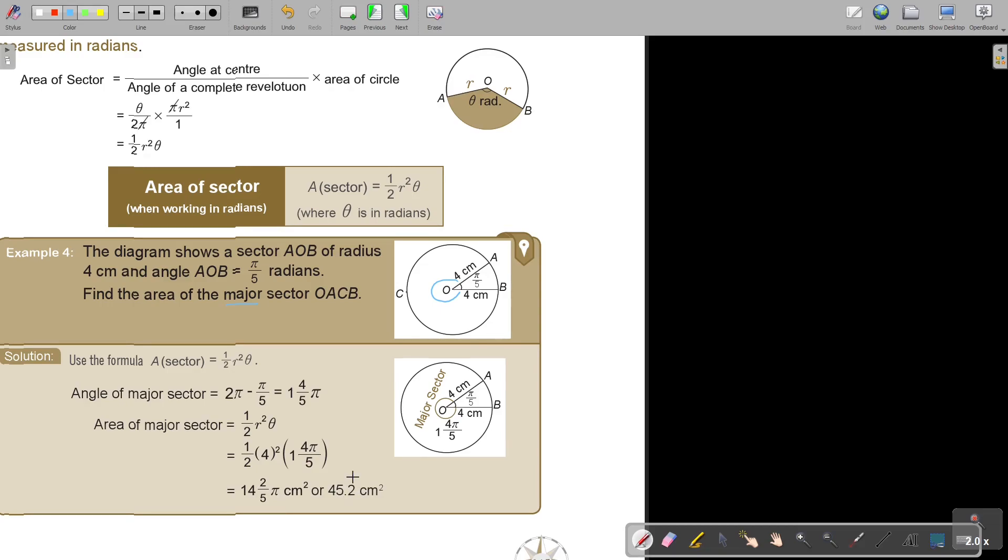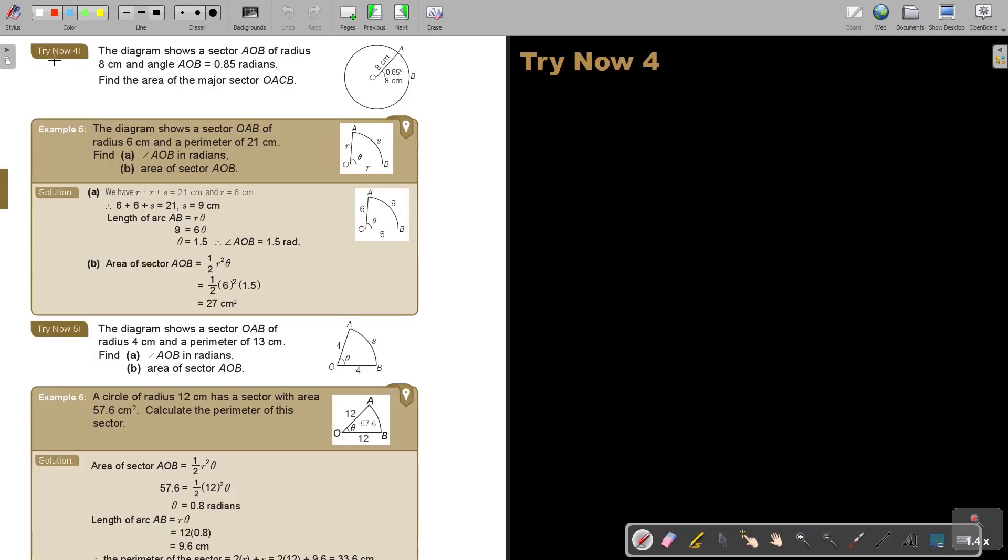I want you to stop the video and do Try Now 4. Let's start with Try Now 4. The diagram shows sector AOB of radius 8 and angle AOB is 0.85 radians. Find the area of the major sector OACB. So it's this one again.